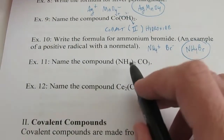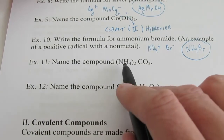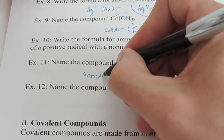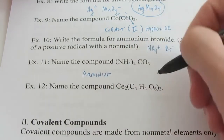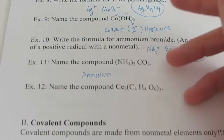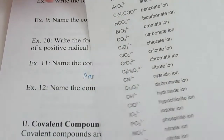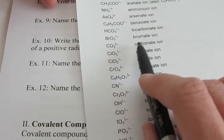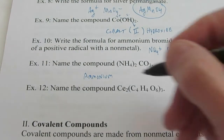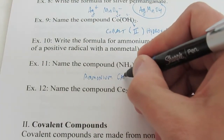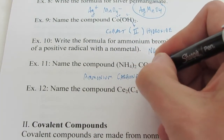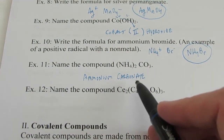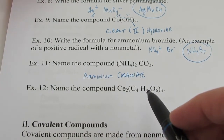Let's try to name one that involves the positive polyatomic ammonium. NH4 is called ammonium, so we write ammonium down. We do not need Roman numerals for it — it's not one of those metals. And CO3, let's find the name of CO3. Here's CO3 right there — that's called the carbonate ion, so we would just say carbonate. We don't change the ending of the polyatomic ions. Just ammonium carbonate. No Roman numerals are required and we don't need to change the ending of the polyatomic.